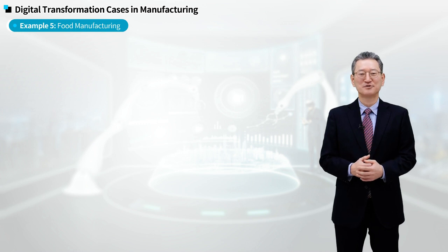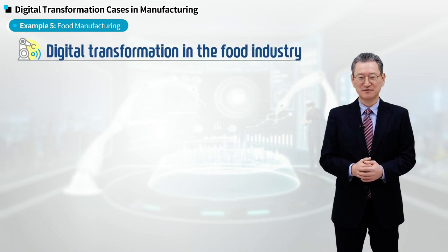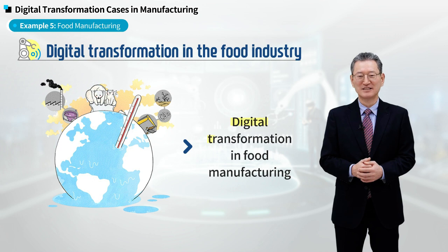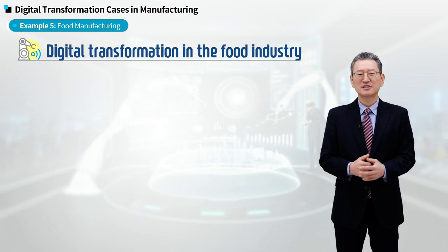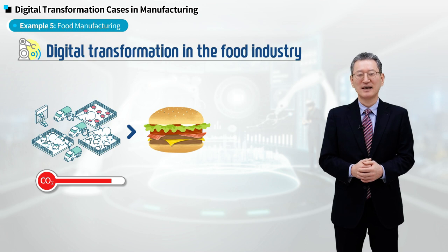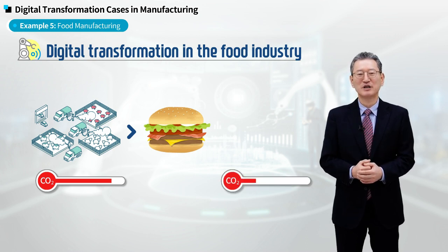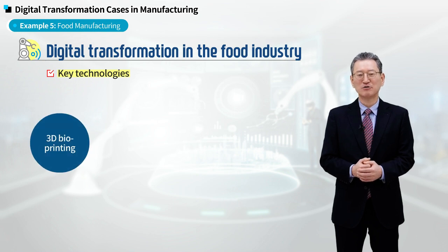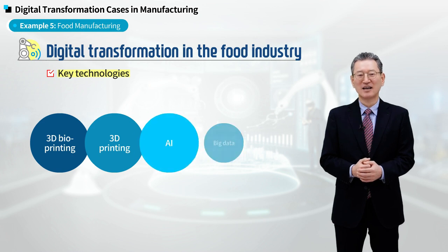The fifth case I'd like to introduce is digital transformation in the food industry. Climate change imposes huge challenges onto human society, and one of the responses is the growth of digital transformation in food manufacturing. Just imagine how much CO2 would be emitted when we grow cows in meadows and process them into meat to make a hamburger. Instead, how much CO2 could we reduce if we can manufacture meat using only water, air, and protein? The key technologies used include 3D bioprinting and 3D printing, as well as AI, big data, and IoT.